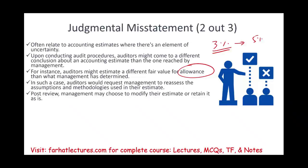Post-review, management may choose to modify their estimate or retain it. After we tell them the issue, they might say okay, we're going to go ahead and fix it, or we're not going to fix it. If they're not going to fix it, for us this is a misstatement. Whether it's material or not, we'll look at that later. If it's material, it's a serious issue — usually they will fix it, but here we're dealing with basically a material misstatement.